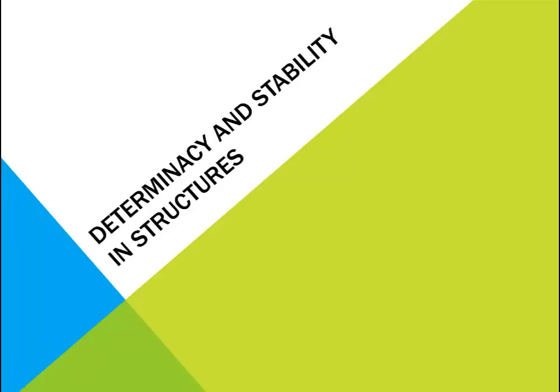Let's revisit high school mathematics first. If the number of unknown variables equals the number of independent simultaneous equations, the equations can be solved to find values for variables. For example, here we have two equations and two variables x and y, so the set of equations can be solved to find the values of x and y, which will be x equals 15 and y equals 5.